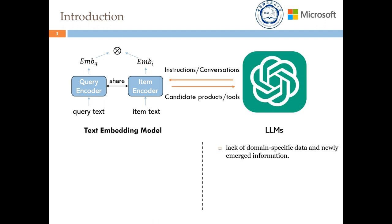Large language models have shown remarkable progress toward artificial general intelligence, but owing to their limitations — such as a lack of domain-specific data and newly emerged information — there is an increasing need for item retrieval techniques to augment large language models.